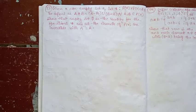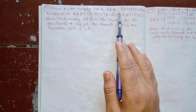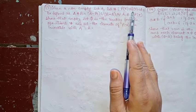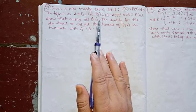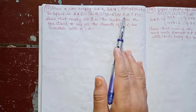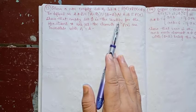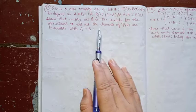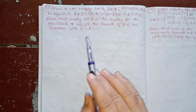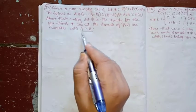Chapter 1 Miscellaneous, question number 13. Define a non-empty set S. Let a binary operation on P(S) into P(S) be defined as A * B equal to A minus B union B minus A, for A, B belonging to P(S). We have to show that the empty set Phi is the identity for this binary operation, and all elements of P(S) are invertible with A inverse equal to A.